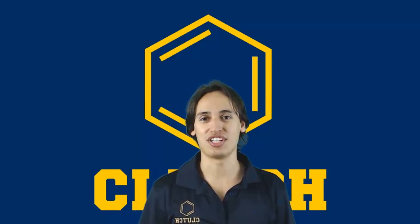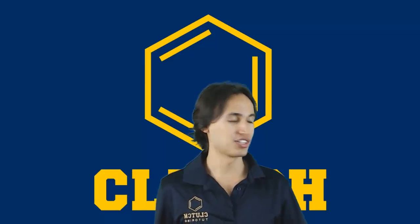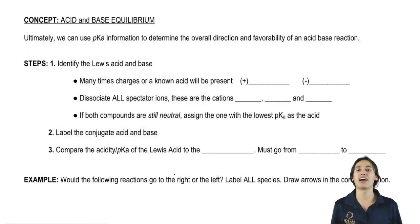So now we've gotten to what's pretty much the holy grail of acid-base chemistry and that is predicting acid-base equilibrium. So let's go ahead and get started on this. For these types of questions, what you're going to be asked is what's the direction of the reaction? Is it going to go to the right or is it going to go to the left?